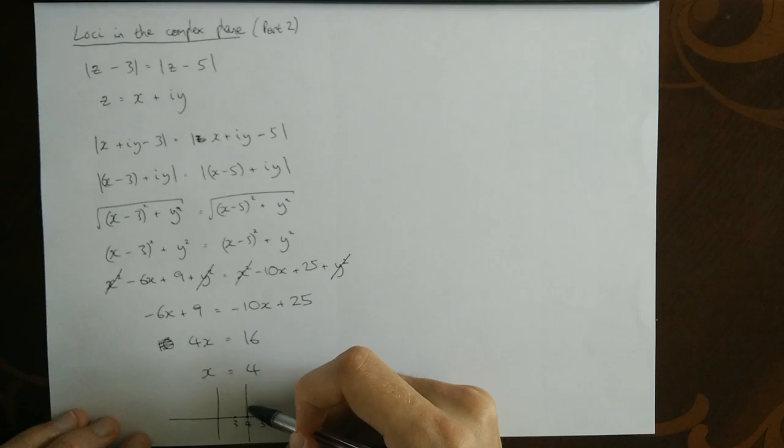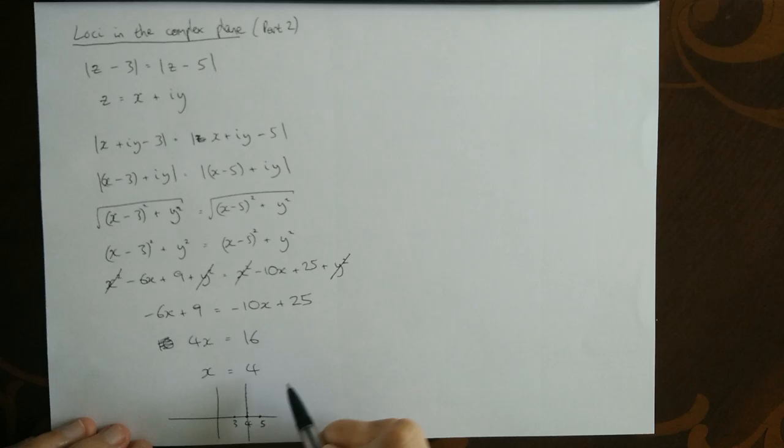In fact, all these points are equal distance from 3 and 5. This is what's known as the perpendicular bisector of 3 and 5, and each point on that line is equally spaced away from 3 and 5, which makes sense, hopefully.